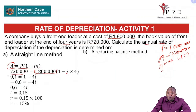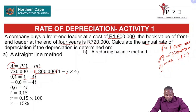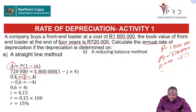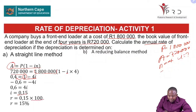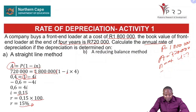We divide both sides by 1,800,000 to get 0.4 equals (1 minus 4i). Transposing: negative 0.6 equals negative 4i. Dividing by negative 4 gives i equals 0.15. Multiplying by 100, the rate of depreciation using the straight line method is 15%.